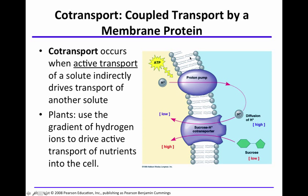Looking at the diagram, this is the phospholipid bilayer with the hydrophilic heads containing the phosphate group, and the hydrophobic core made of fatty acid chains. You have a proton pump here and a sucrose-hydrogen ion co-transporter. It's like getting a two-for-one deal — two solutes are being transported using a single mechanism.